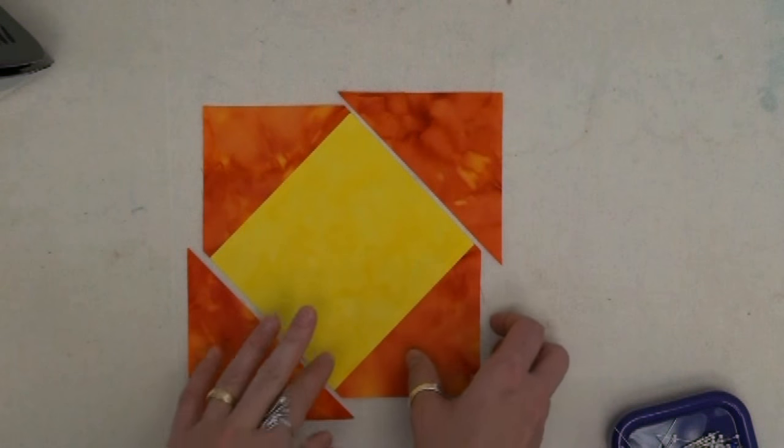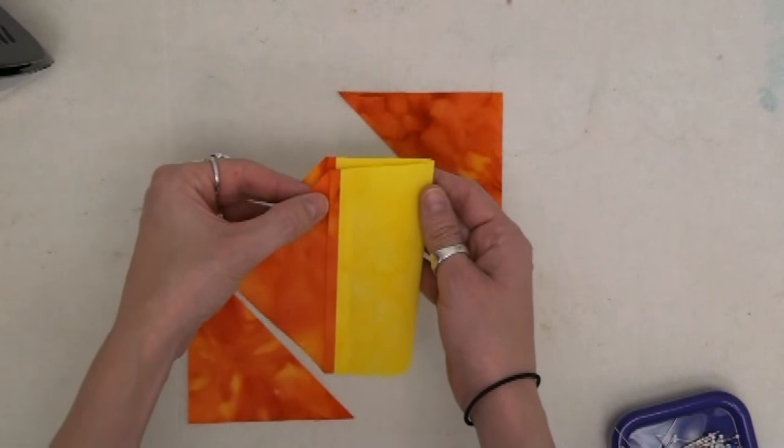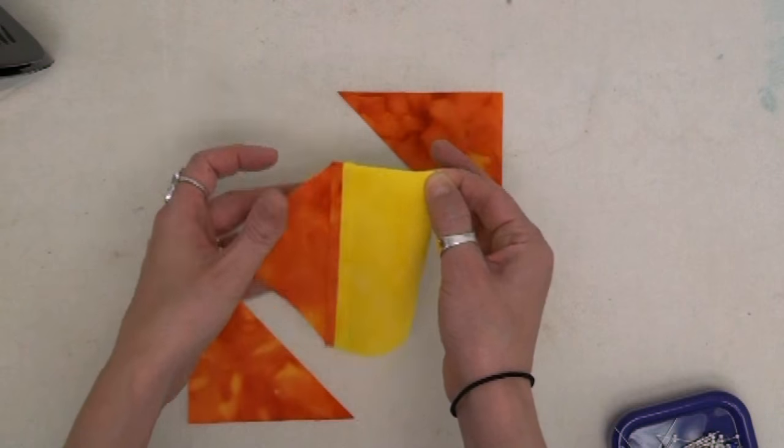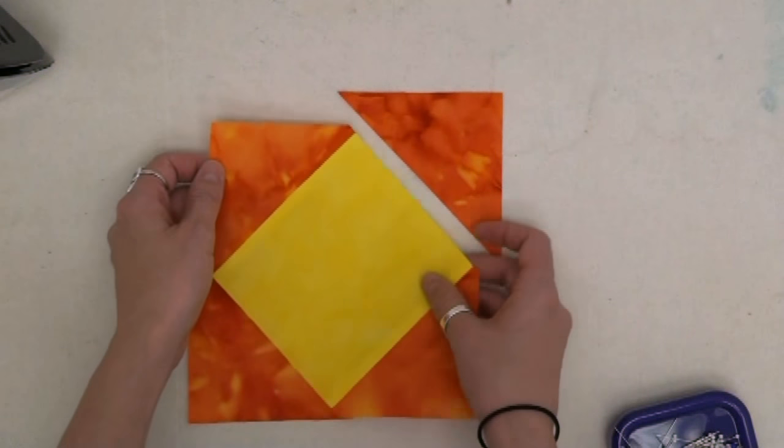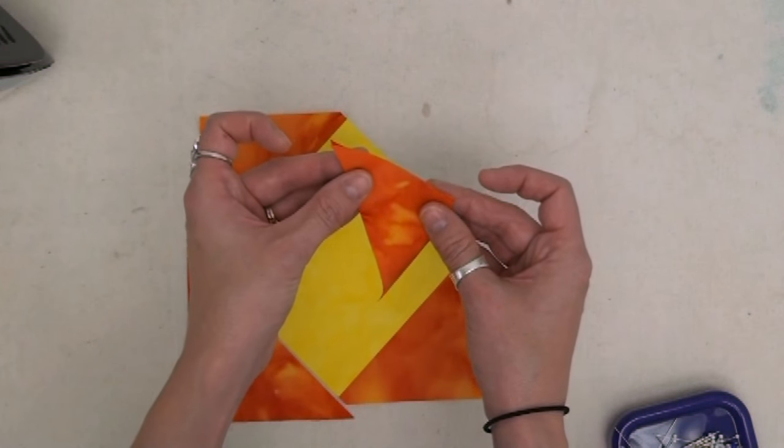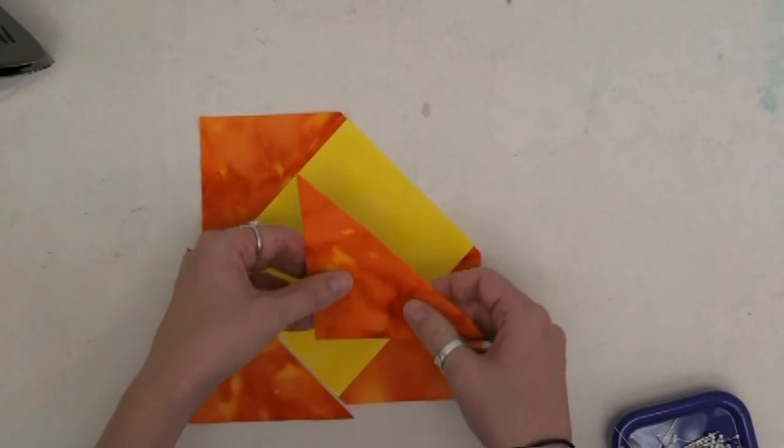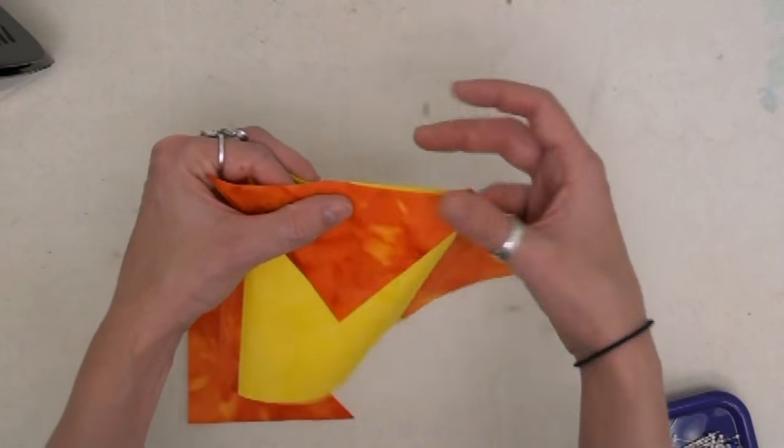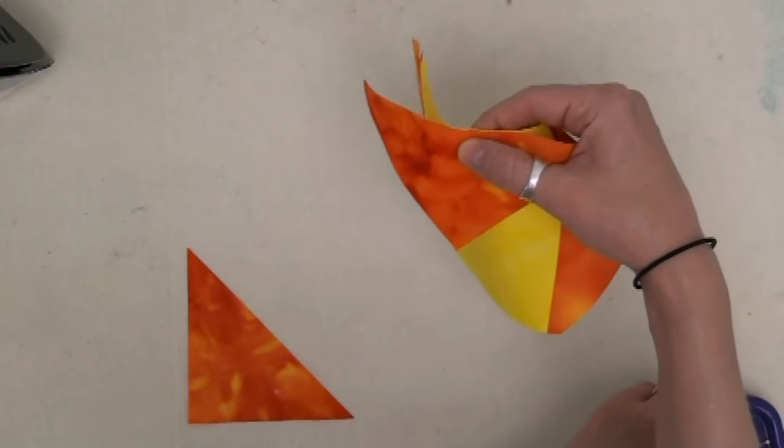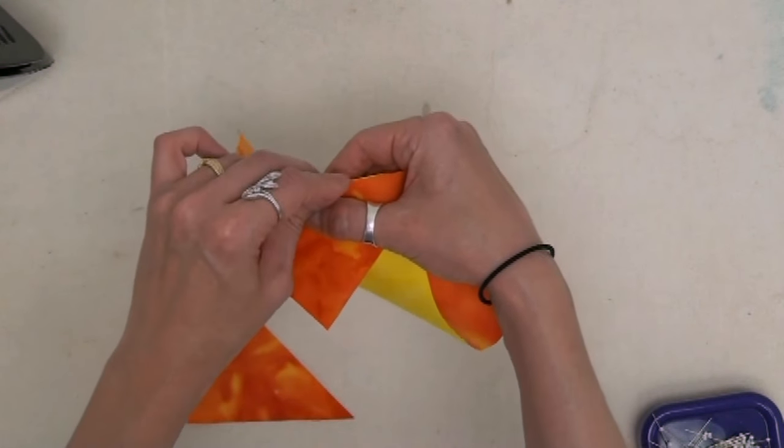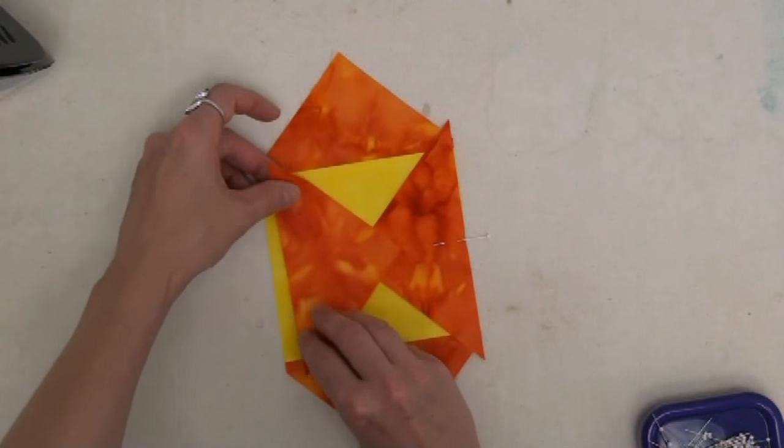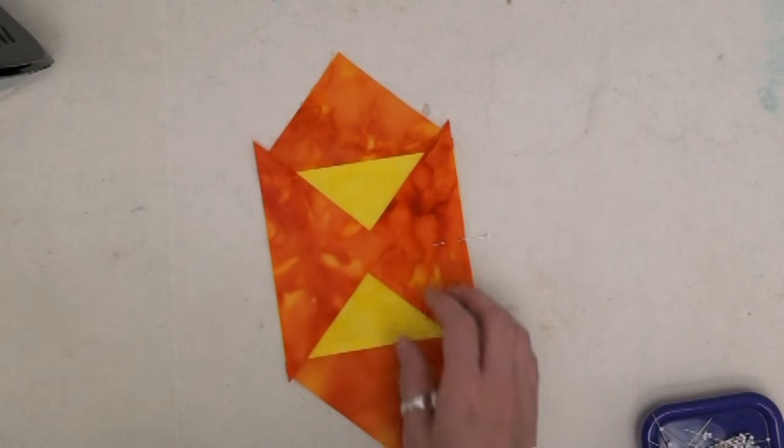The final step to our square in a square block: now fold it in half. Again, just lining up those two seam lines and do a little finger crease right in the middle. Do the exact same thing to your triangle. Fold it in half, give it a little finger crease, and then line up those two creases so that they're exactly in alignment. Pin it in place and now let's take it to the machine and stitch through it one more time. We're going to attach this side and this side and our square in a square unit will be complete.